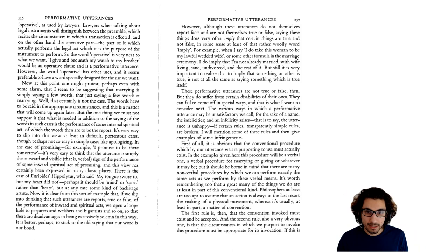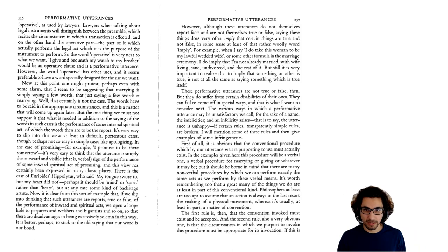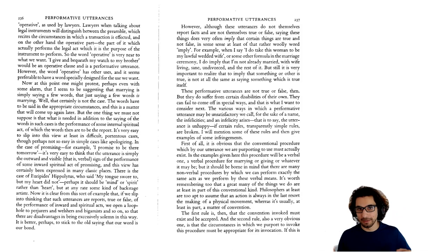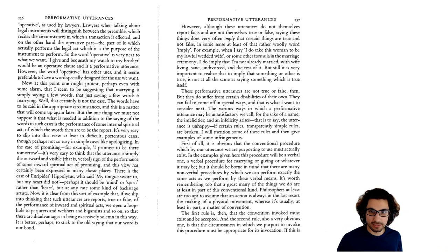Performative utterances are not true or false, but they do suffer from certain disabilities: 'They can fail to come off in special ways. The various ways in which a performative utterance may be unsatisfactory we call, for the sake of a name, the infelicities.' Felicity — from the Latin felix, meaning happy — and infelicity refer to whether a performative works and actually does what it's supposed to do, or fizzles and goes wrong. 'An infelicity arises — that is, the utterance is unhappy — if certain rules, transparently simple rules, are broken.'